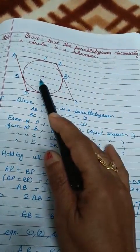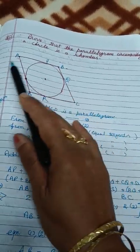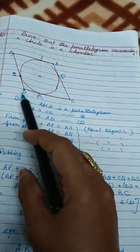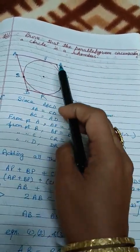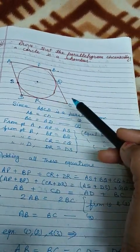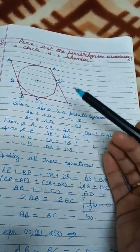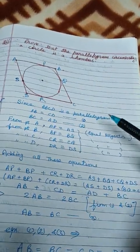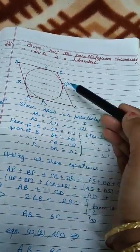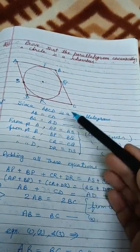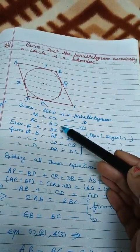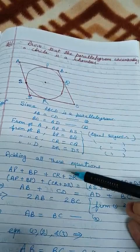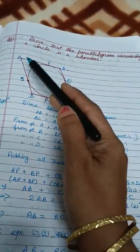सबसे पहले ले लिया एक circle, circle में बाहर बाहर से tangent draw कर लिए। यह line A, B, C, D — यह sides आगई parallelogram की। Parallelogram ABCD लिया जिसमें parallel sides equal होती हैं, तो AB = CD और BC = AD आगया।